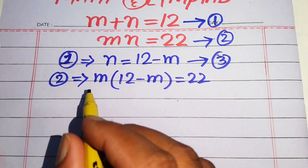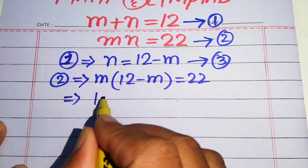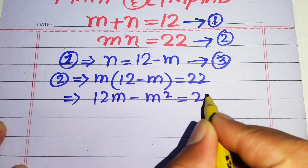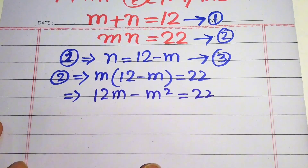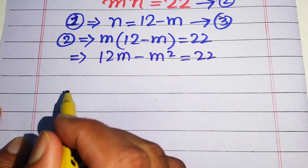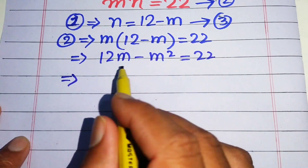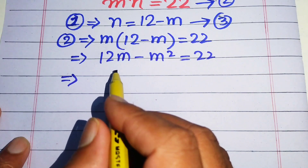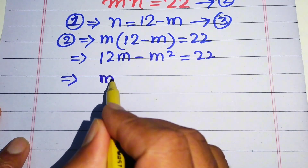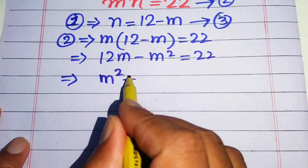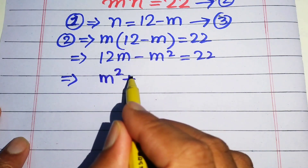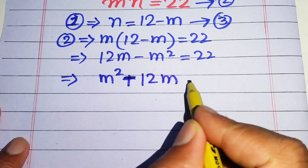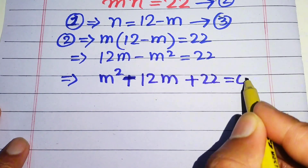We multiply m on both terms to get 12m minus m² equals 22. Then we rearrange the terms: minus m² moves to the right as plus m², and plus 12m moves as minus 12m, giving us m² minus 12m plus 22 equals 0.